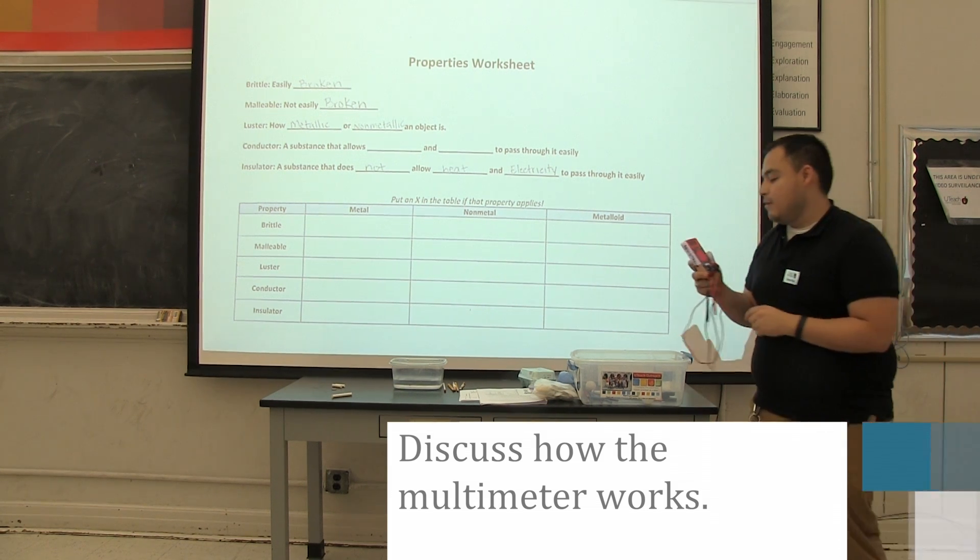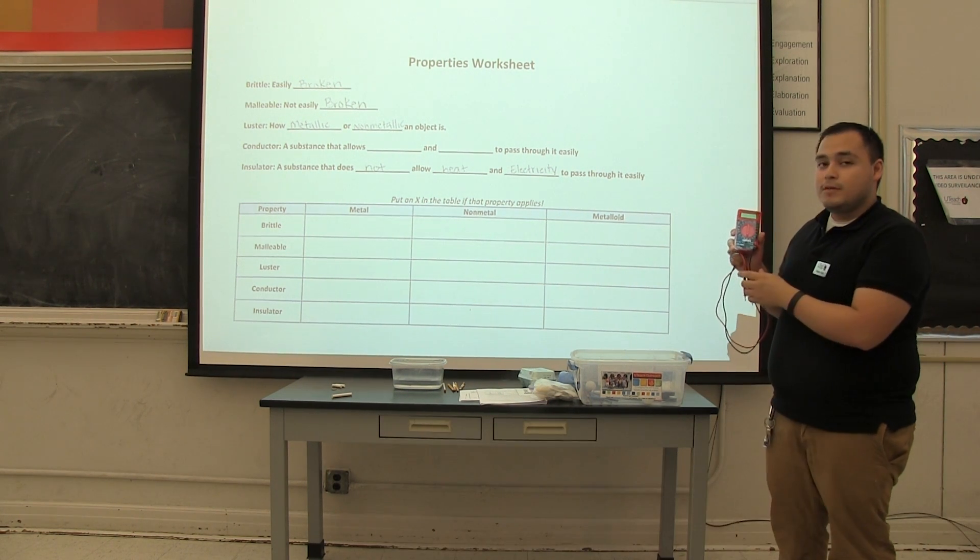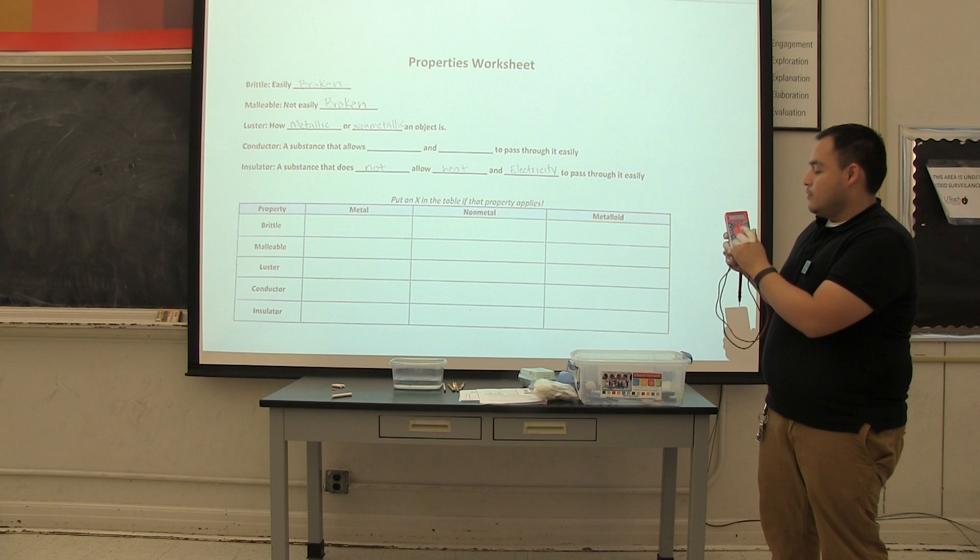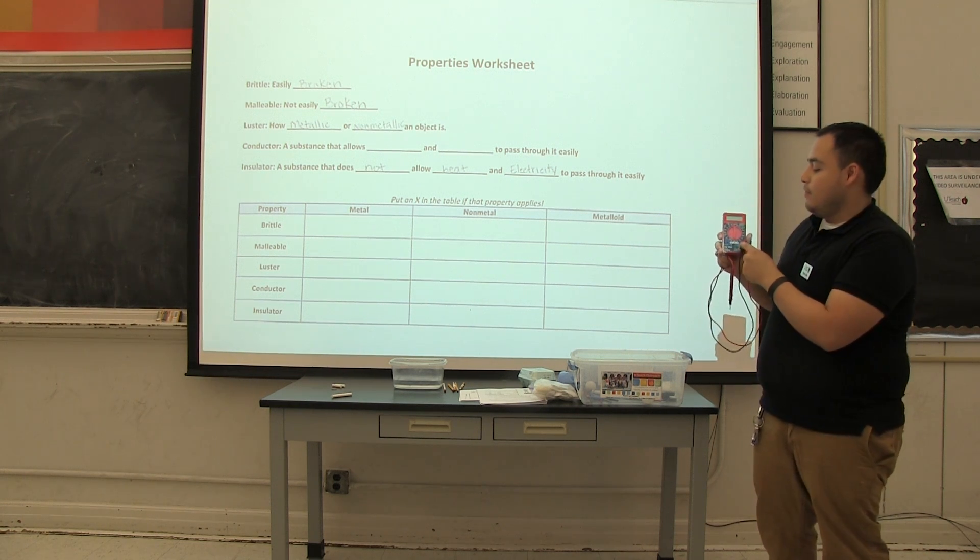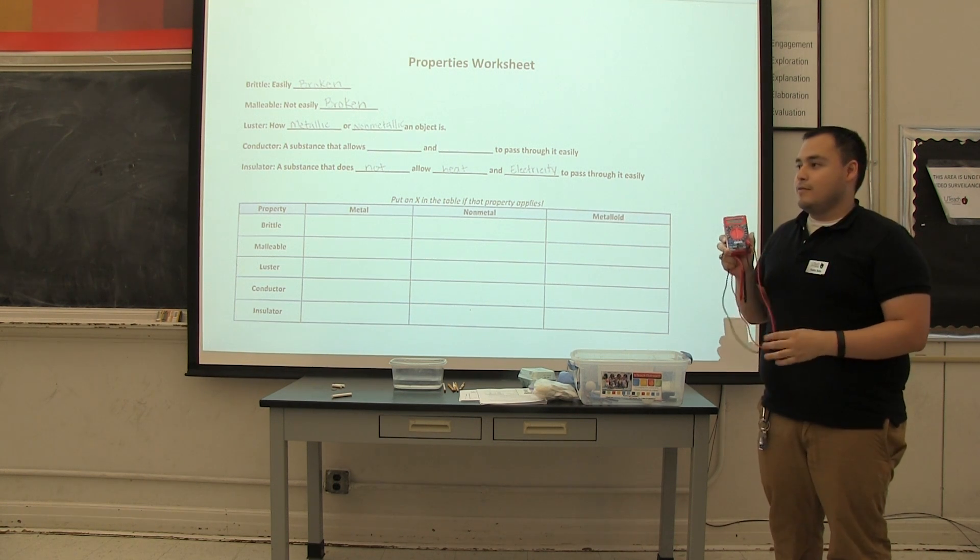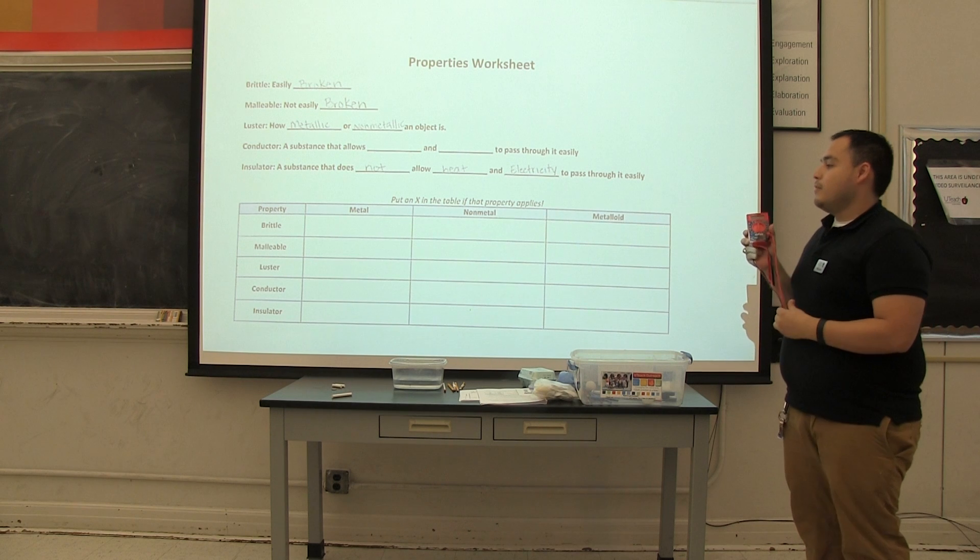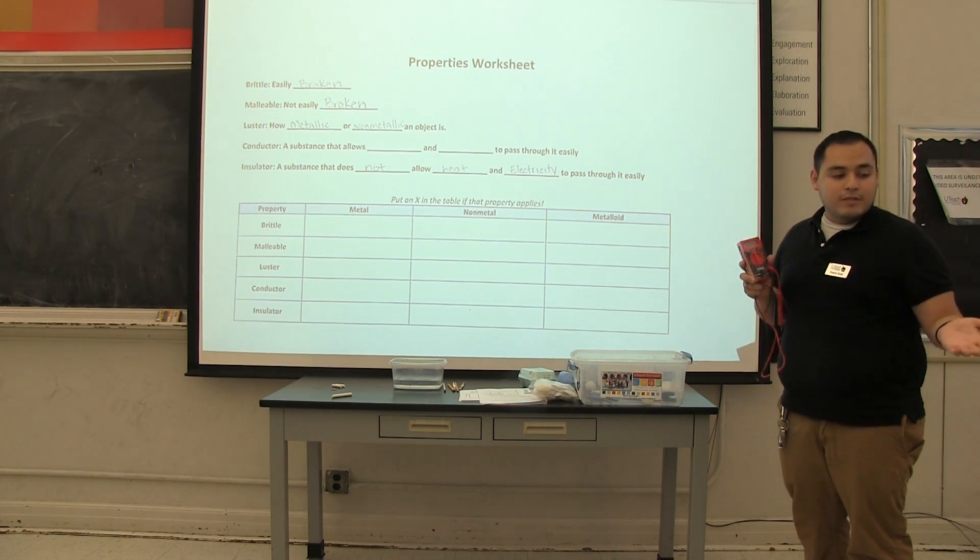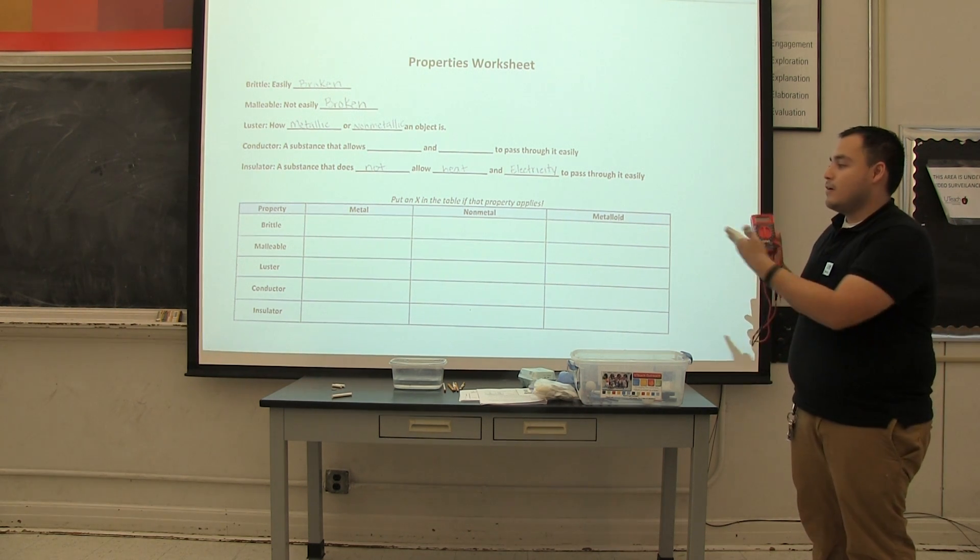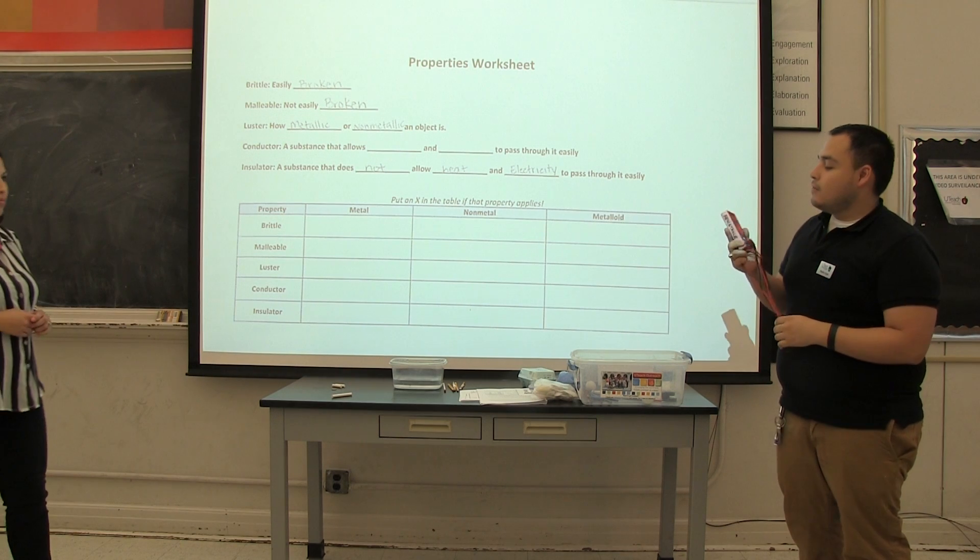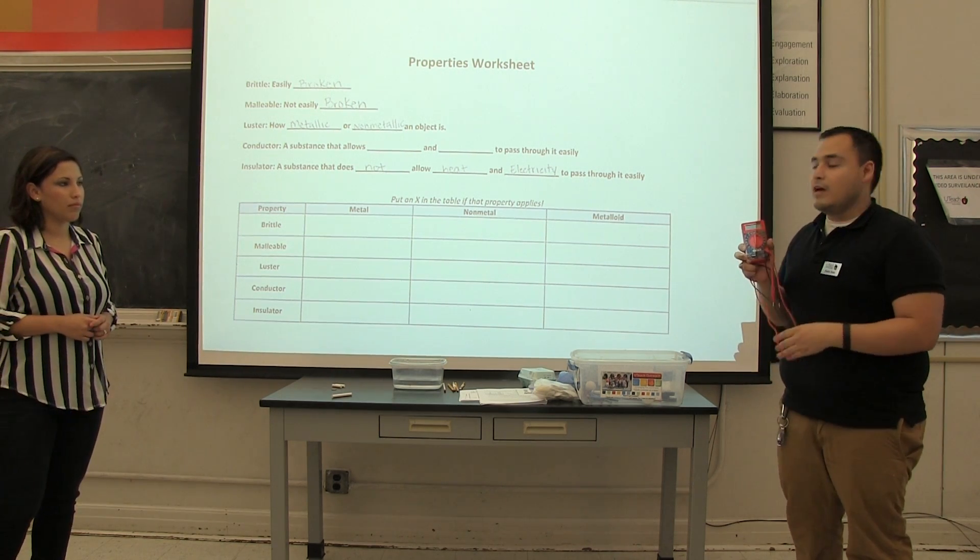All right, so with this tool we need to make sure for a couple of things before we start. So we're going to set our multimeter to 200 ohms, so the dial should be pointing down as you can see here. So we're going to use our multimeter to check whether our materials are conductors or insulators. It's going to check the resistance to see how much electricity can go through or heat.